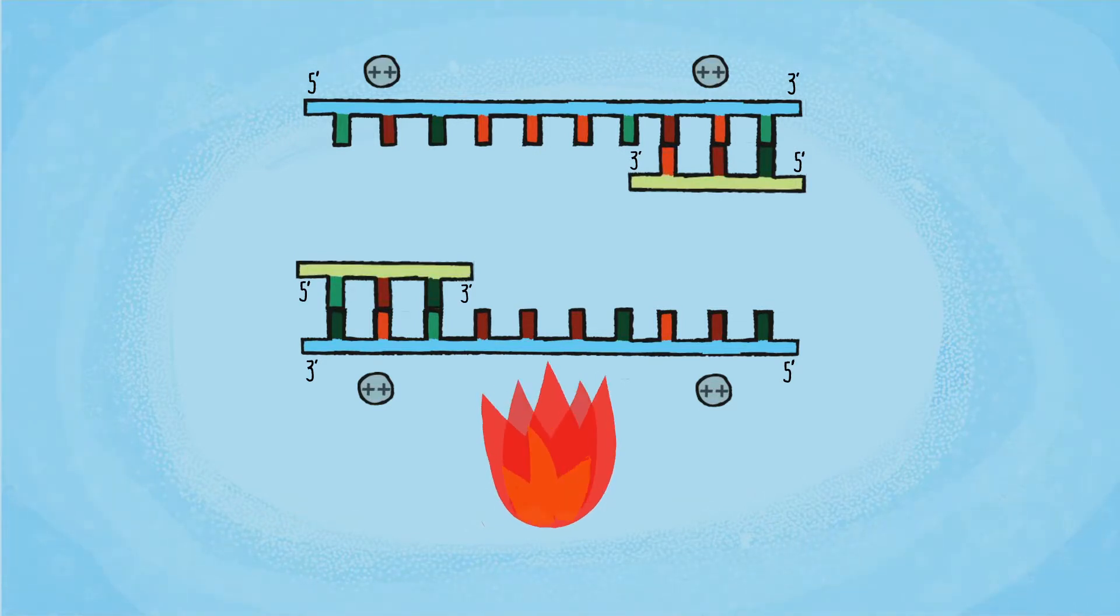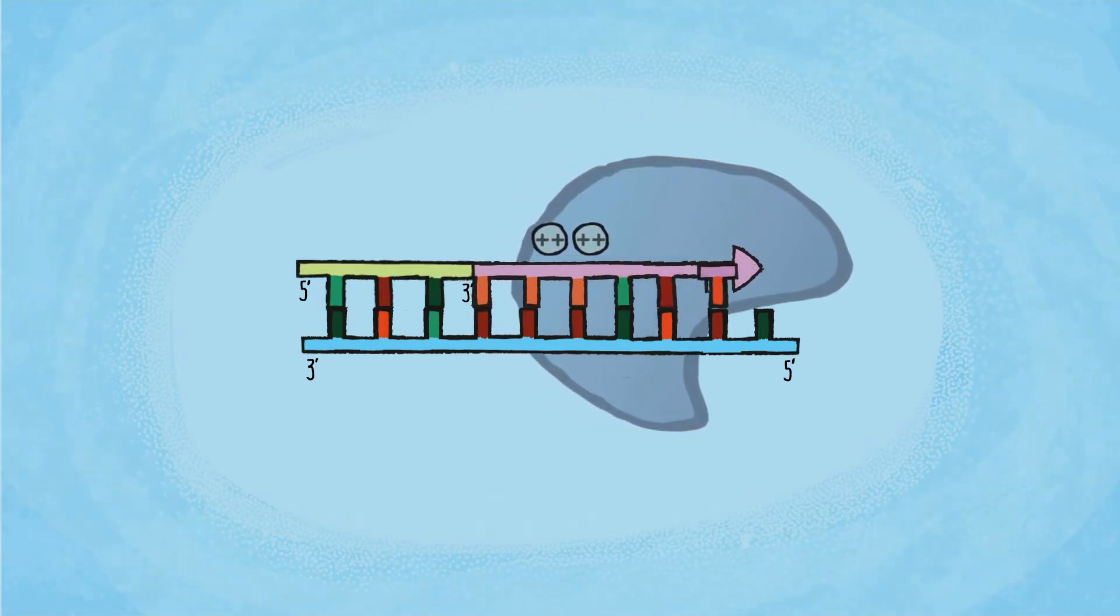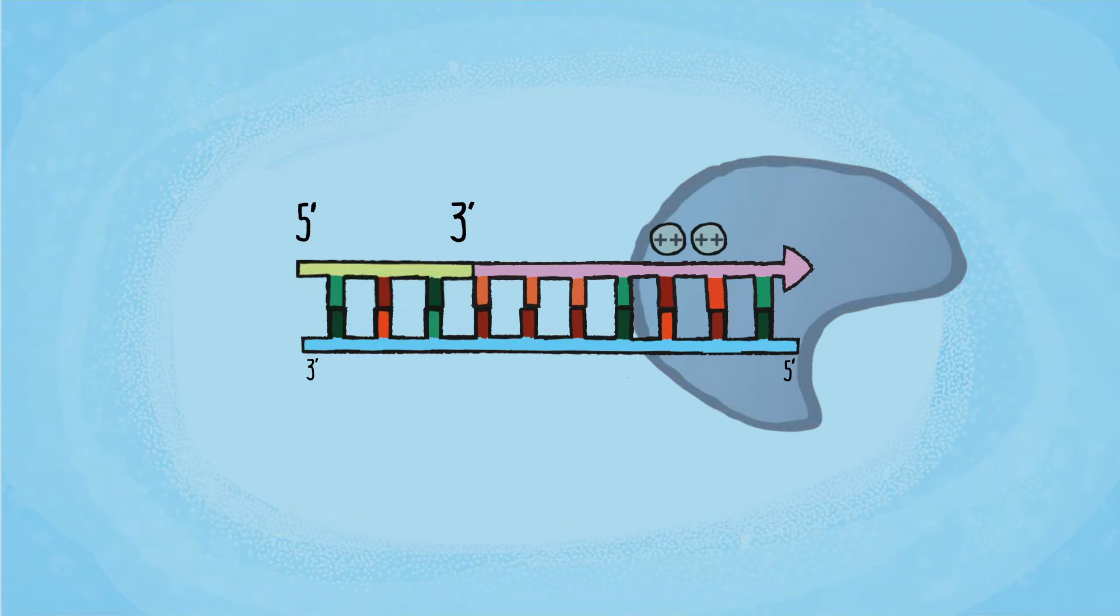During the annealing step, the temperature is decreased, allowing the primers to form stable associations with their target sequences on the single-stranded DNA. Once annealed to the single-stranded DNA, the double-stranded region at the primers allows the DNA polymerase to bind and start extension by adding DNTPs complementary to the template strand. DNA polymerase can only synthesize in the 5' to 3' direction by extending the 3' end of the primer.